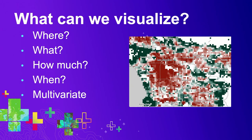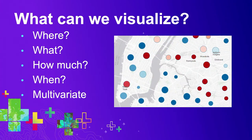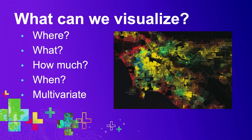Also numeric data - how much of some attribute or variable exists in a particular location. In this case, it's the average household income in Los Angeles, whether it's above or below the poverty level. And when stuff exists - in this case, clustering 311 calls in New York City to indicate which calls were resolved ahead of schedule versus behind schedule, red meaning they were late and blue they were early. A combination of all those concepts leads to multivariate visualization, such as this dot density one. The where, what, how much, and when are really good things to think about when trying to come up with what you're trying to show.